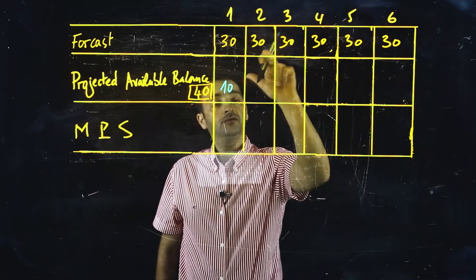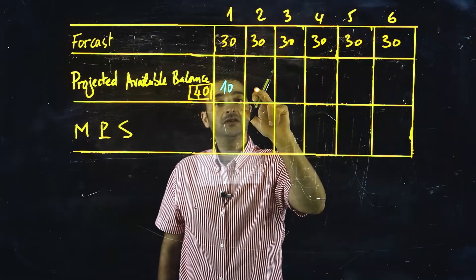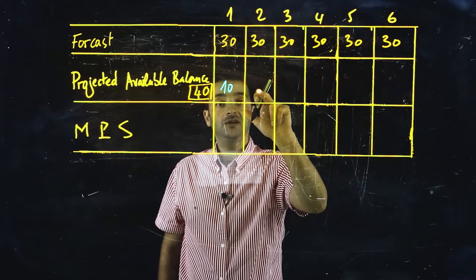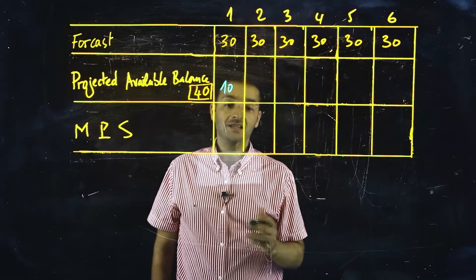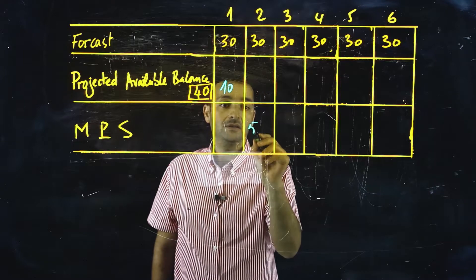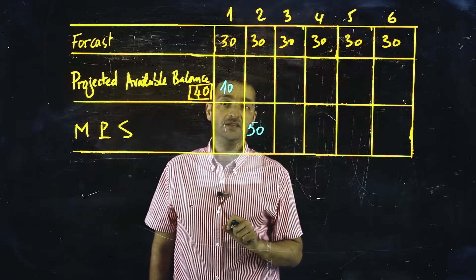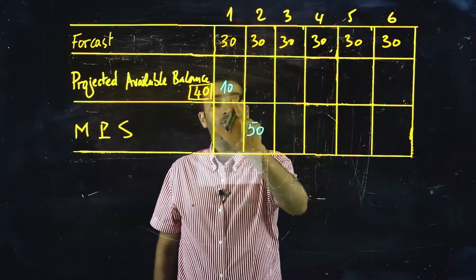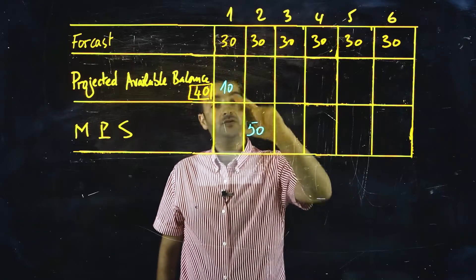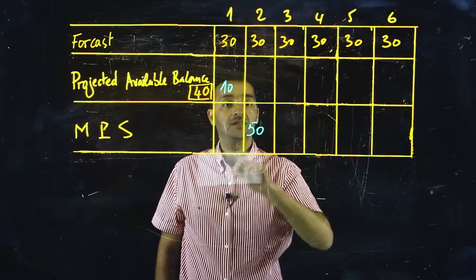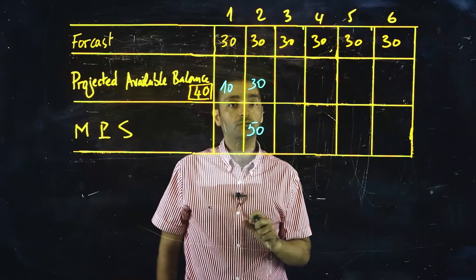If we do 10 minus 30, the result will be a negative value. If you have a negative value, you need to schedule an MPS receipt. The lot size is 50 units — we cannot order less than 50. So the MPS receipt will be 50 units for the second period. We already have 10 available balance plus 50 the new receipt, so the total will be 60 minus the forecast of 30. The new projected available balance for the end of the second period will be 30 units.